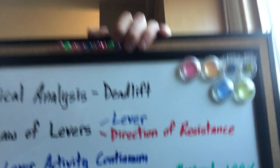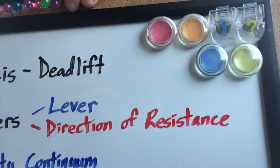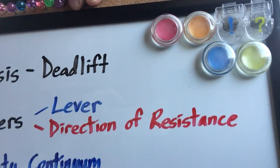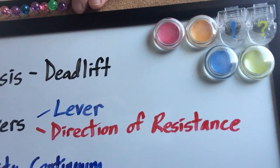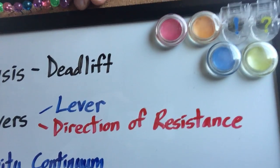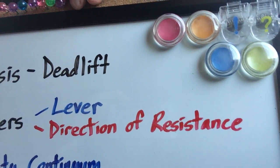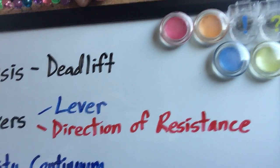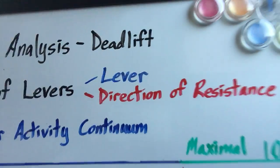So we use the universal law of levers. There's two variables that you need to understand: there's a lever and a direction of resistance. If you can understand the relationship these two variables have on one another, you'll better understand the role that biomechanics plays in executing any exercise that you do.